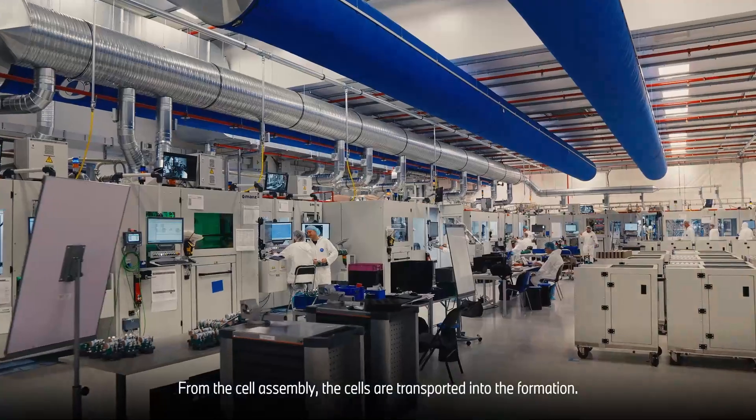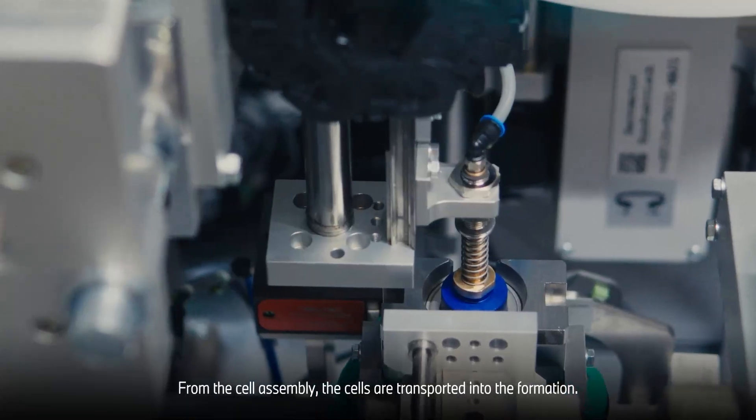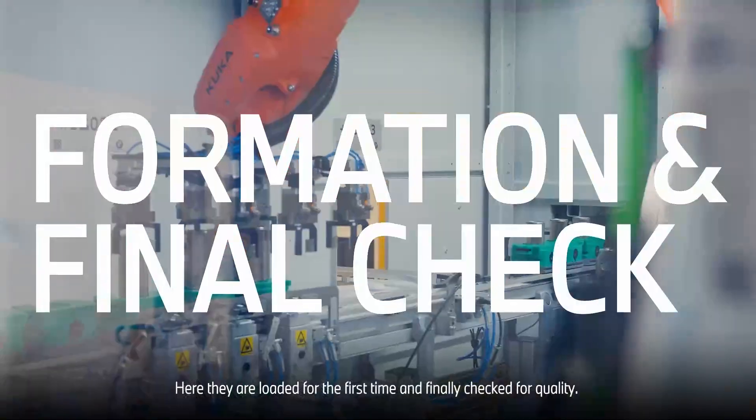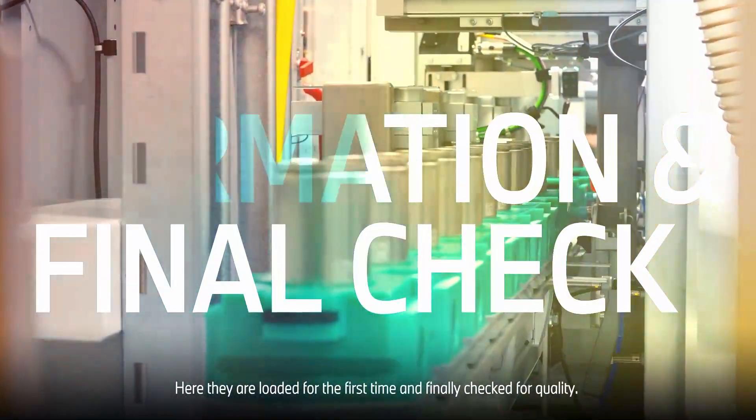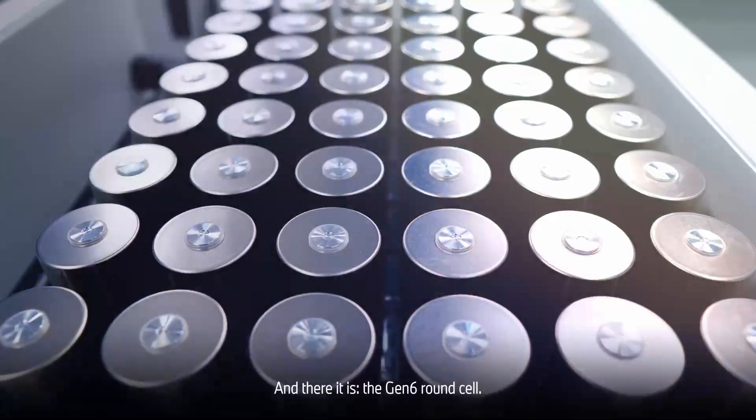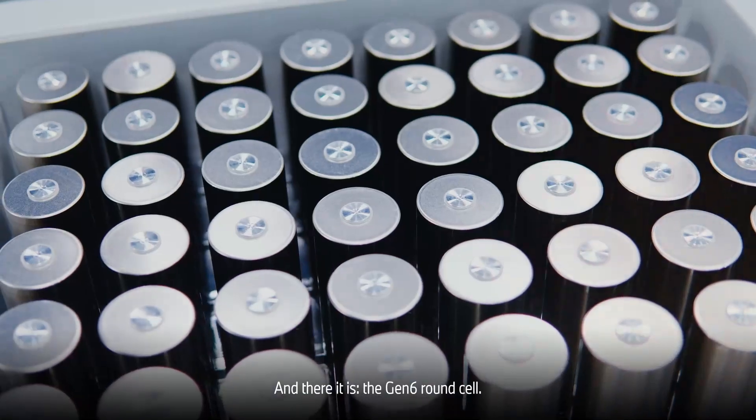From the cell assembly, the cells are transported into the formation. Here, they are loaded for the first time and finally checked for quality. And there it is, the Gen 6 round cell.